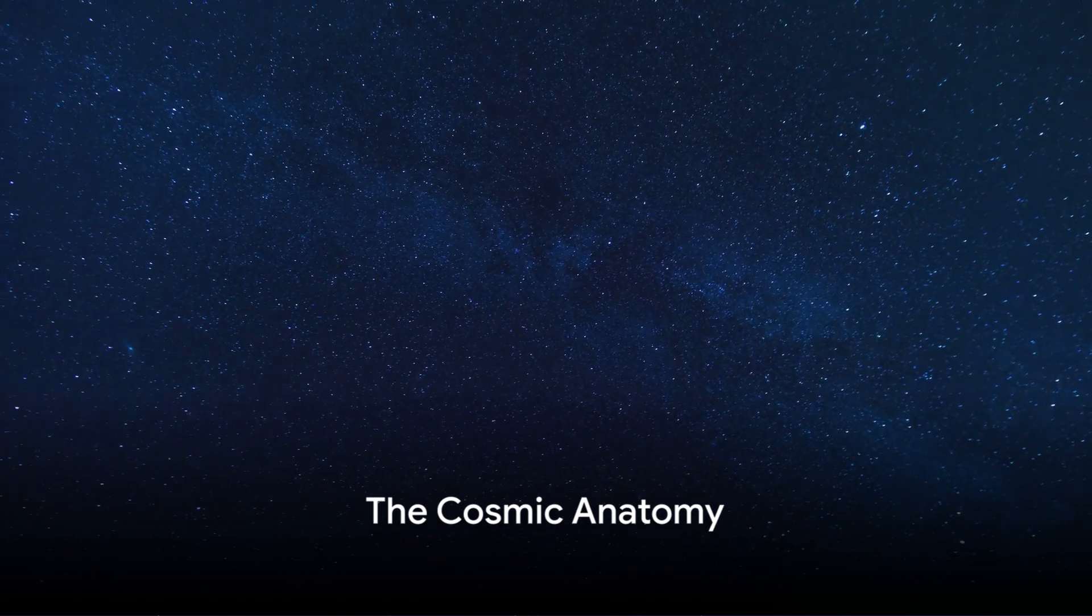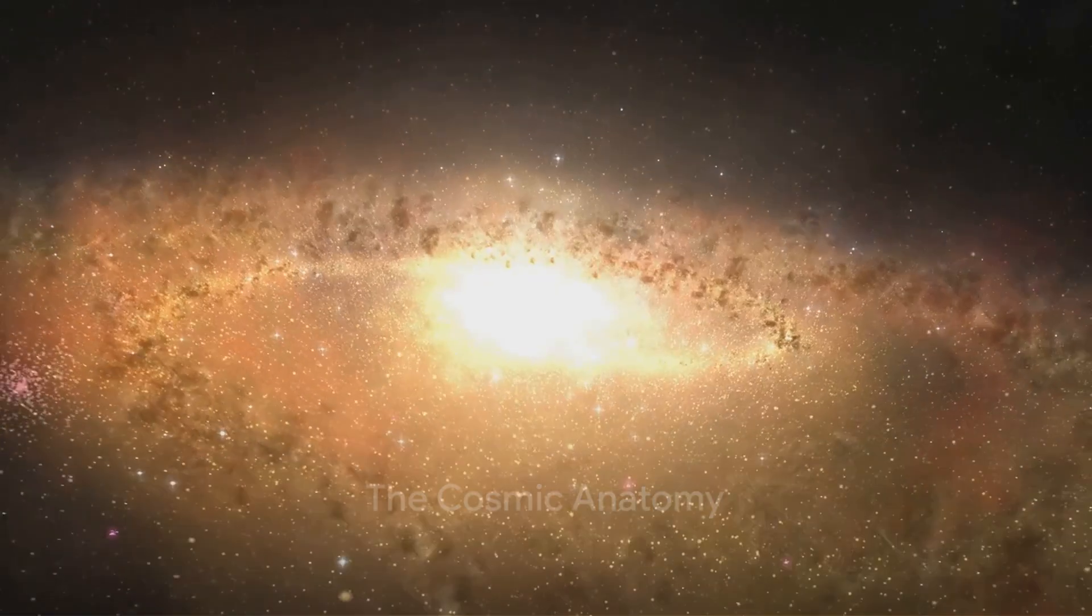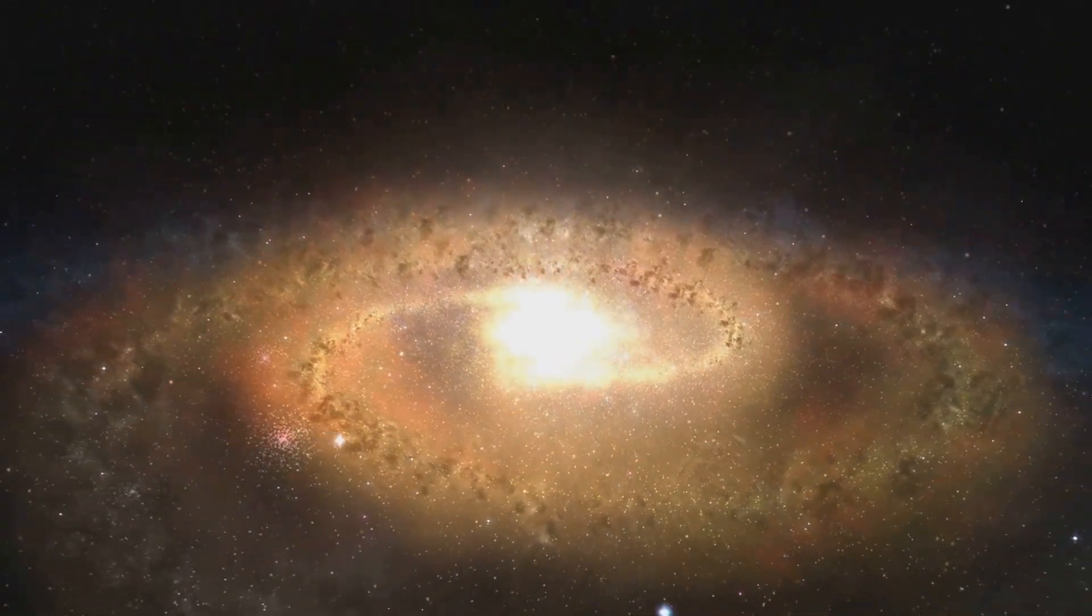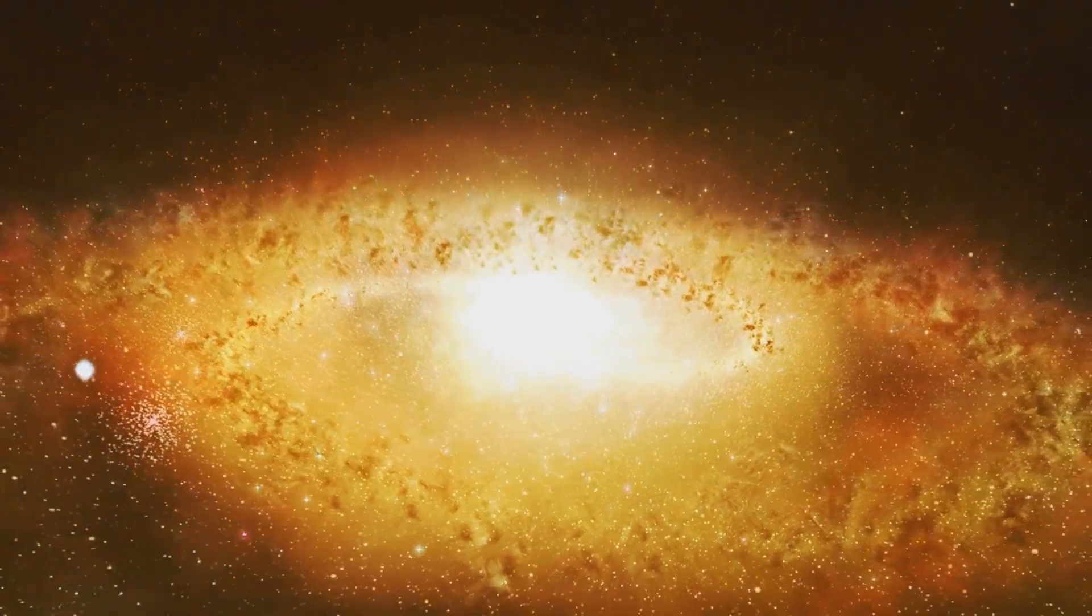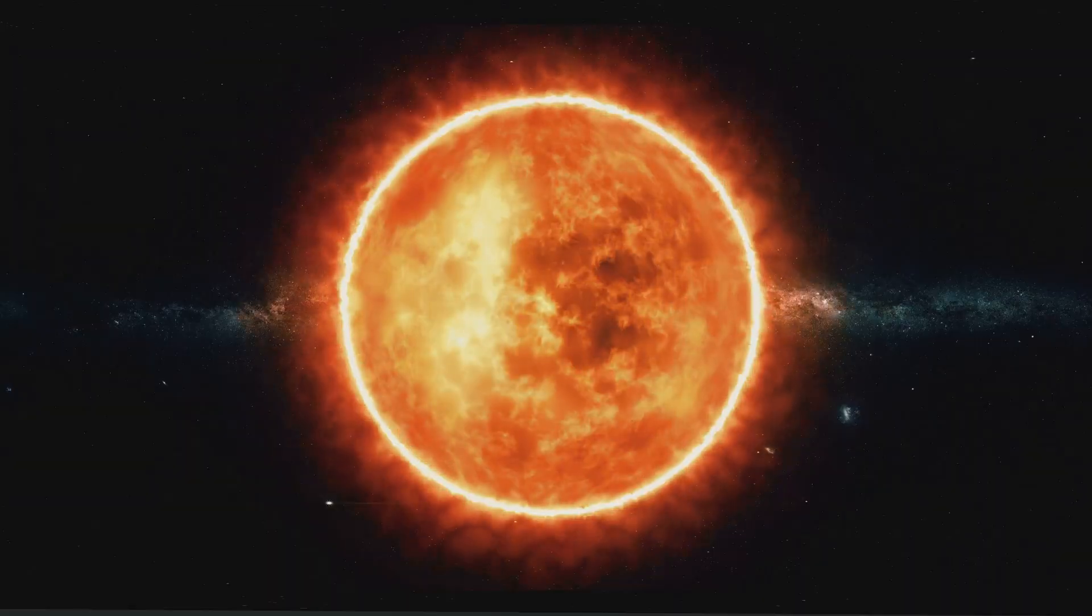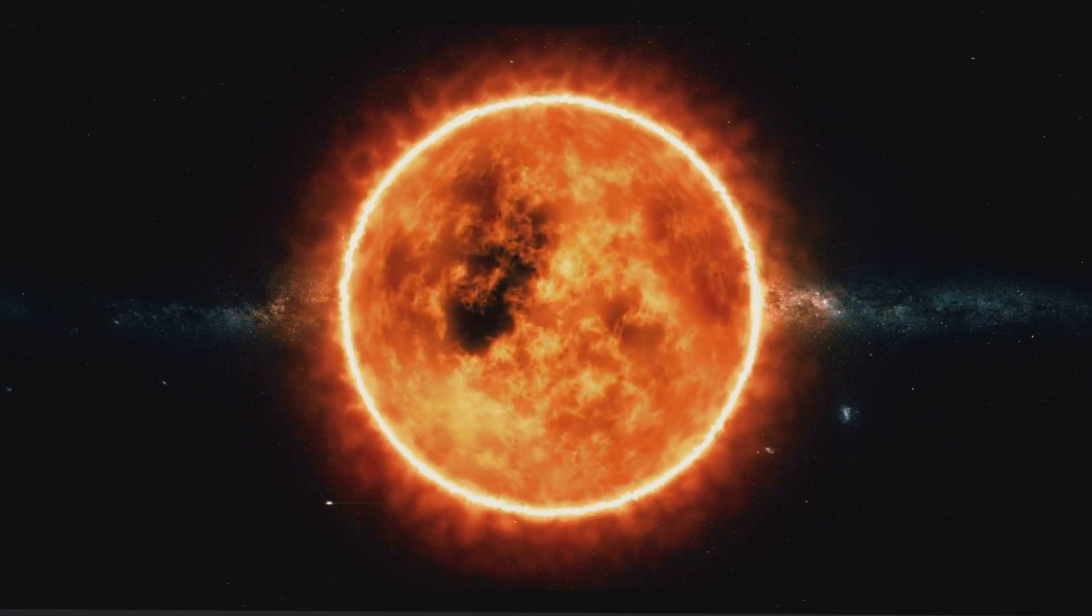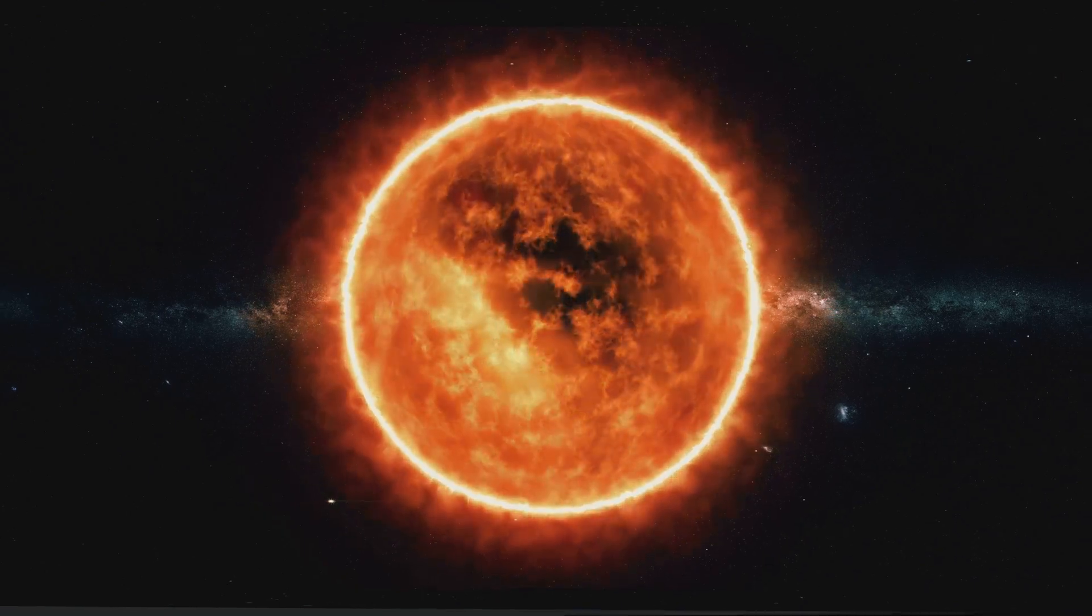Now let's explore the Milky Way's cosmic anatomy briefly. From the central black hole, Sagittarius A asterisk, to the spiral arms and the halo, each part contributes to the unique conditions in our galactic neighborhood. We'll discover how the sun's solo journey through the galactic suburbs plays a pivotal role in maintaining our cosmic haven.